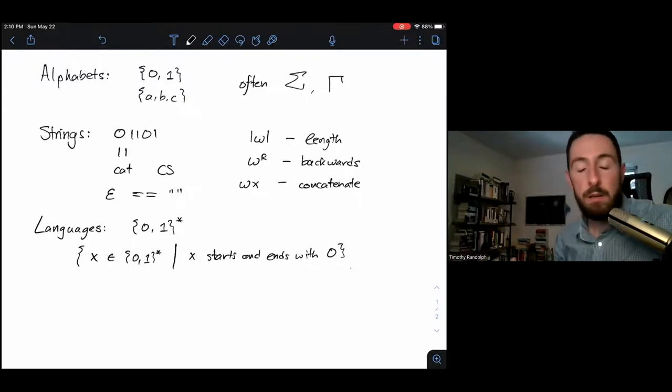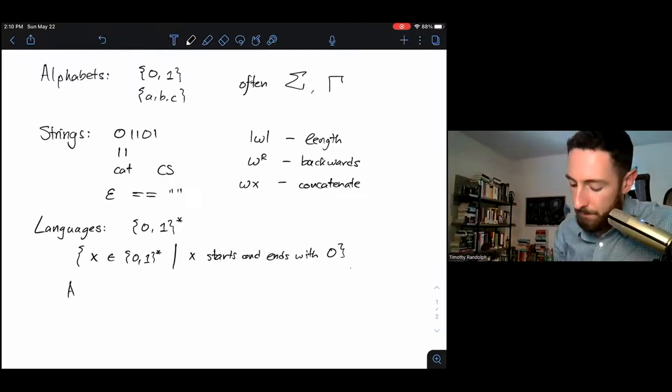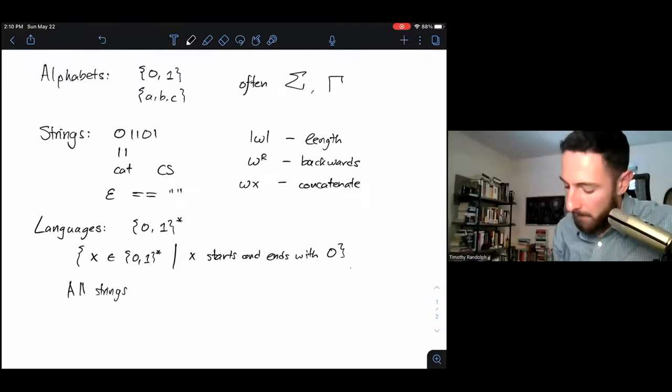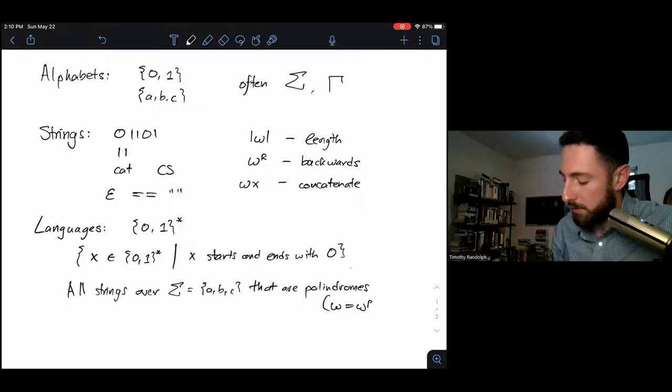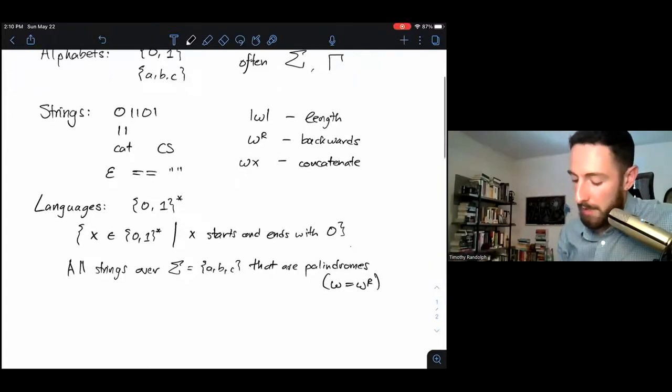I can also define languages in terms of ordinary English. So I could write all strings over sigma = {a,b,c} that are palindromes, where a palindrome is a string which equals its own reverse. That's a perfectly well-defined language, as long as I know what a palindrome is.